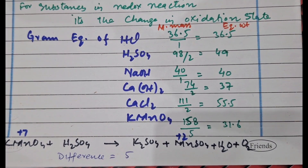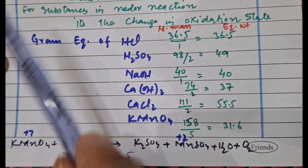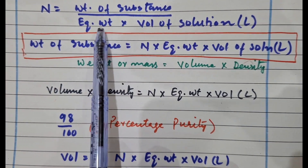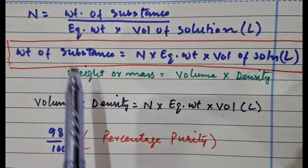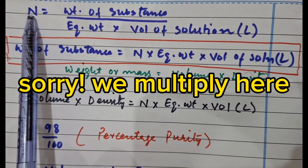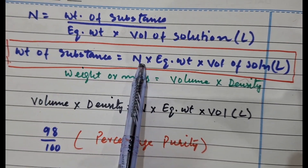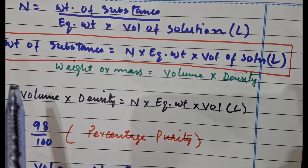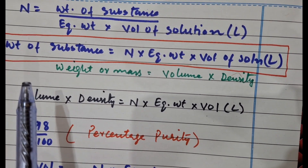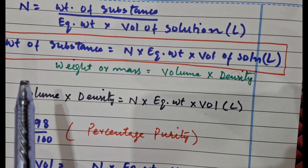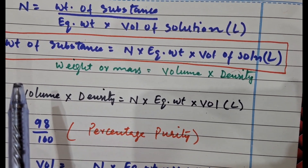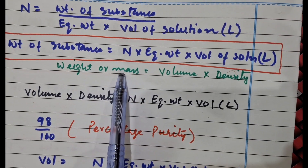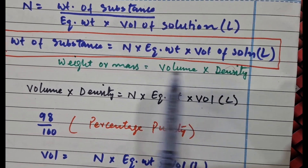Now that you understand equivalent weight, let's go back to our equation: normality equals weight of substance divided by equivalent weight into volume of solution in liters. Rearranging, normality into equivalent weight into volume of solution equals weight of substance. For H₂SO₄ we deal with volume, not weight, and H₂SO₄ is not always 100% pure. So in place of weight of substance, we substitute volume into density.